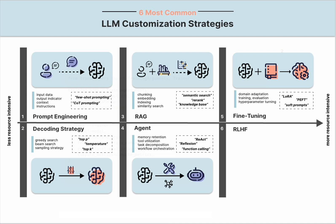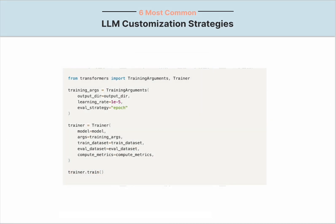Reparameterization methods adjust model weights by training the weights of low-rank representations. For example, Low-Rank Adaptation, or LoRA, accelerates fine-tuning by representing the weight updates with two smaller matrices. Additive methods add additional trainable layers to the model, including techniques like adapters and soft prompts. The fine-tuning process is similar to a deep learning training process, requiring inputs such as training data and hyperparameters. To initiate a fine-tuning process, we can use the Trainer class from the Transformers library, which takes arguments including training and evaluation datasets.